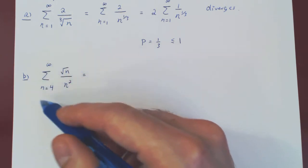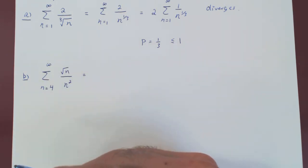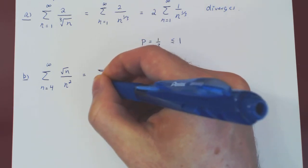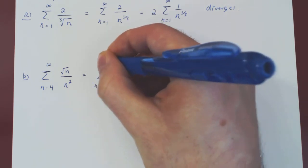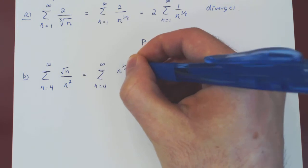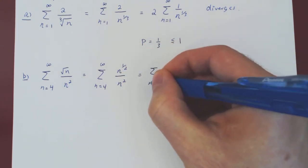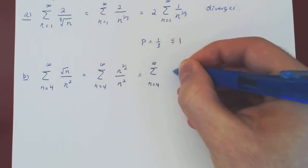So this is still, hopefully, will be a p-series. Well, let's rewrite root of n as n to the 1 half. And now here we can cancel our exponents and combine as a single power of n.